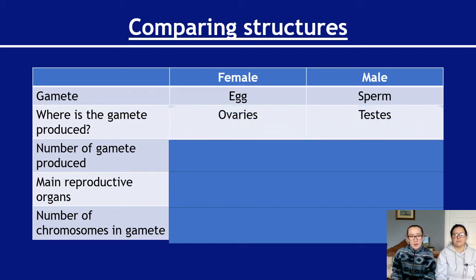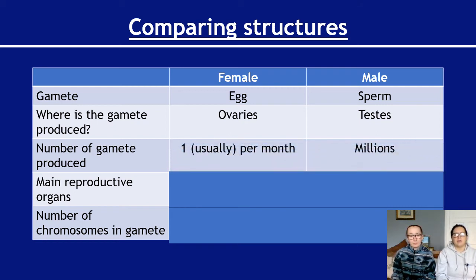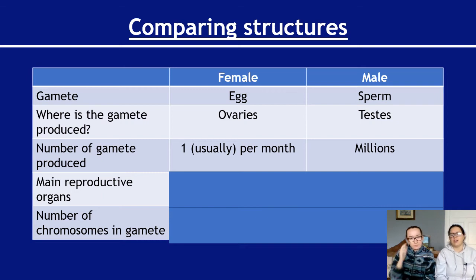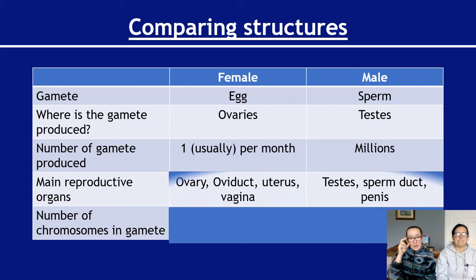Comparing structures: the female gamete is the egg, produced in the ovaries; the male gamete is the sperm, produced in the testes. For females, roughly one gamete is produced per month; for males, millions — up to 120 million sperm in a single ejaculation, though you don't need to know those exact numbers for National Five. The main reproductive organs: for females — ovary, oviduct, uterus, vagina; for males — testes, sperm duct, penis.